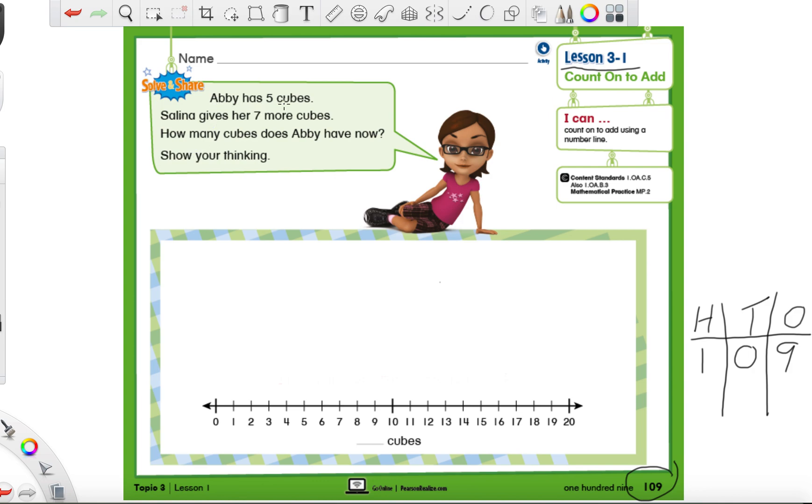So Abby has five cubes. Go ahead circle that number five. It's pretty important. Selena gives her seven more cubes. Let's make sure we circle that seven. How many cubes does Abby have now? Show your thinking. We have two important numbers, but we also need to search for some words that tell us if we're going to add or subtract. So we have the word gives and more. So if you're giving someone more stuff, then you're going to have a bigger number at the end. So that means we need to make an addition sentence.